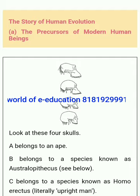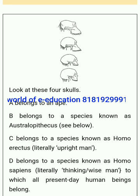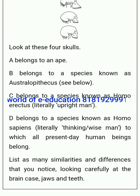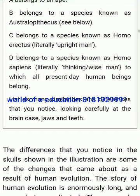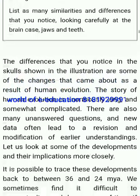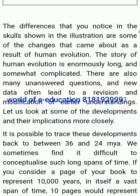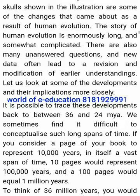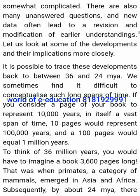The story of human evolution: look at four skulls. The first belongs to an ape. The second belongs to a species known as Australopithecus. The third belongs to a species known as Homo erectus, literally upright man. The fourth belongs to a species known as Homo sapiens, literally thinking, wise man — to which all present-day human beings belong. Note the similarities and differences — particularly in the brain case, jaws and teeth. The story of human evolution is enormously long and somewhat complicated. There are many unanswered questions and new data often lead to revision and modification of earlier understandings.